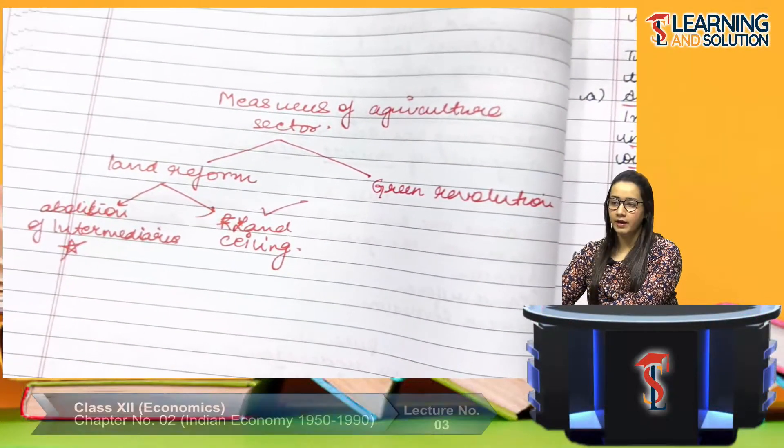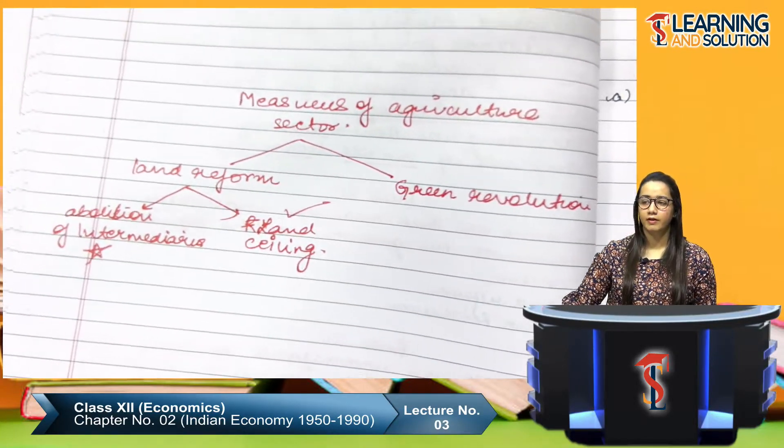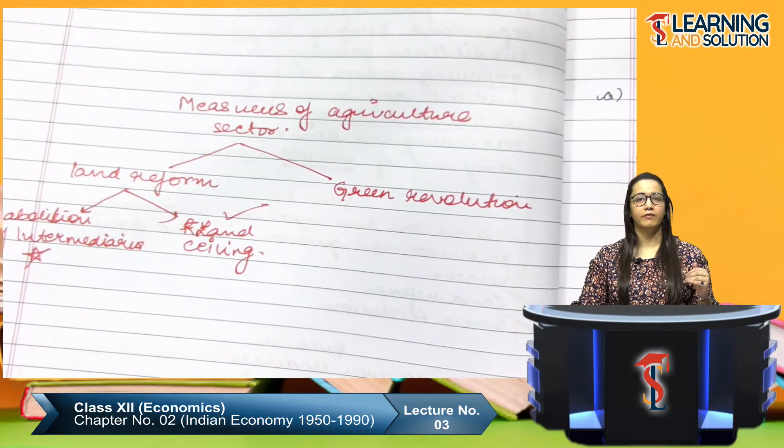Equity means distributing equally across the whole population so that there is no disparity between the rich and the poor. Then we discussed our agriculture sector in which we had made a small table. In the agriculture sector there were two measures: one is land reform and one is the green revolution.